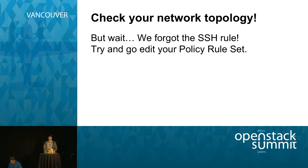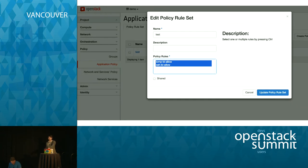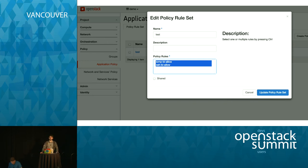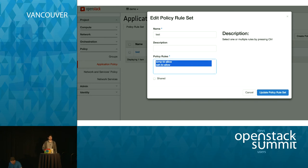Let's go and actually update your policy rule set. We forgot to add the SSH rule. Go to Application Policy and edit the test policy rule set you created. You can now specify both the ICMP and SSH bidirectional allow rules, and update the policy rule set. If you want to test some traffic, you can go on the VM console and try that you can actually ping the VMs and SSH into them after you do this.